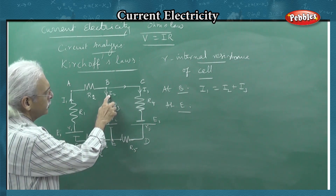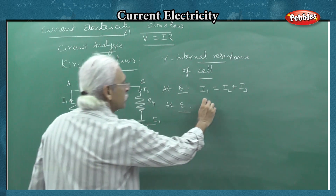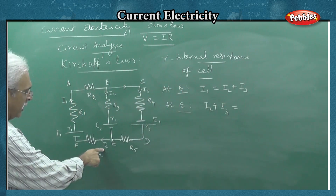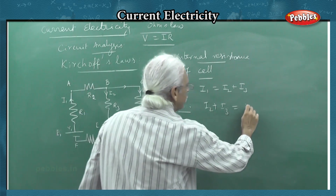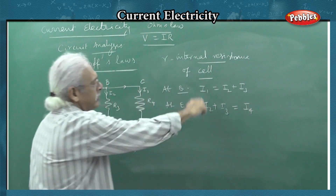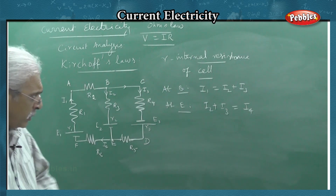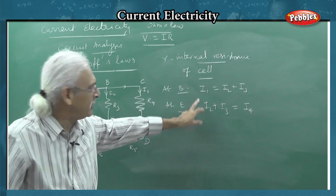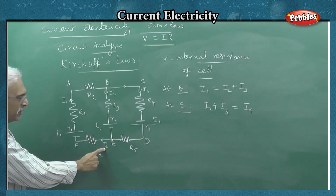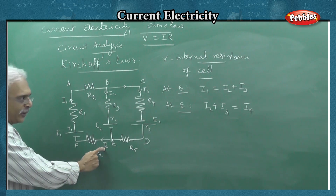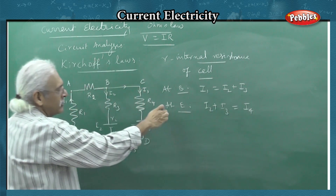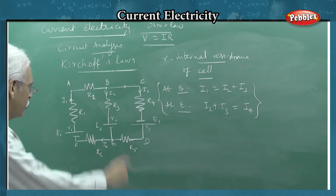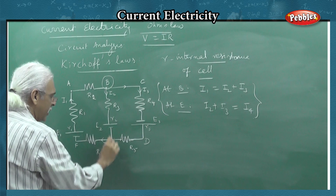At Junction E: I2 and I3 are entering, I4 is leaving. So I4 is equal to the sum of currents I2 and I3. Also, I1 equals I4, since I1 is the sum of I2 and I3, and so is I4. This is the current law — the junction rule — at junctions B and E.